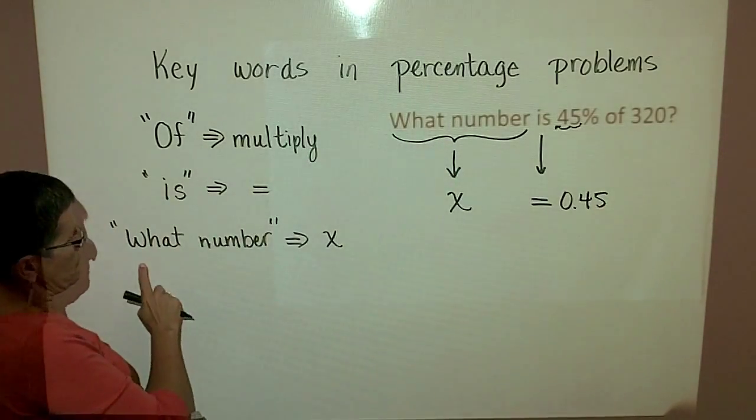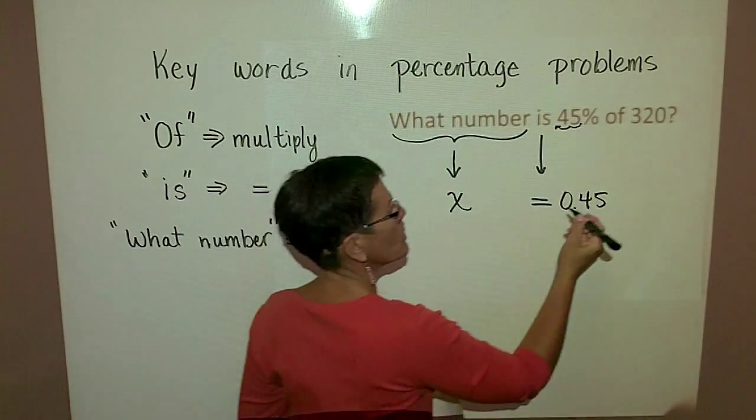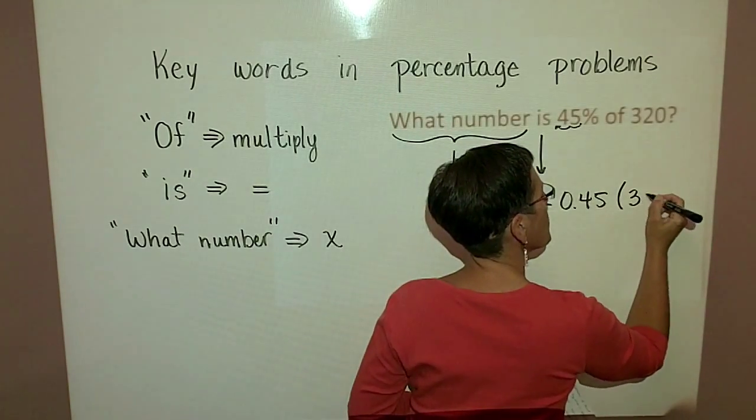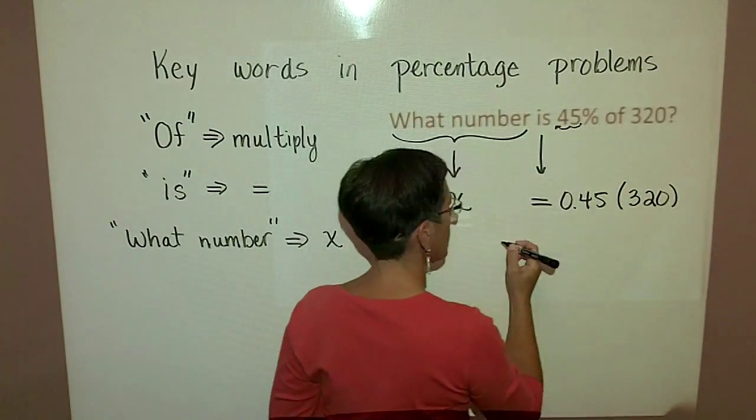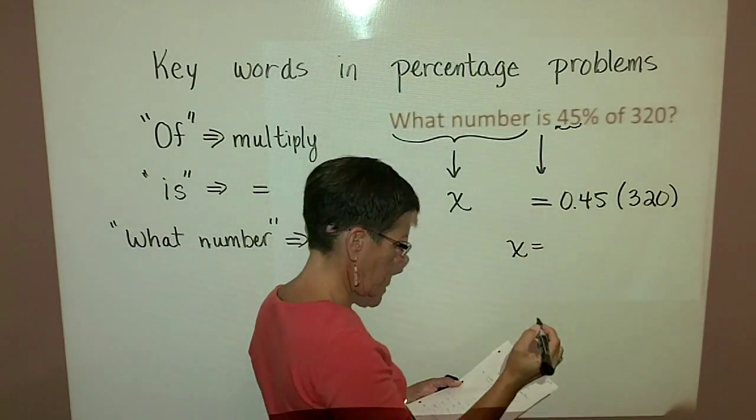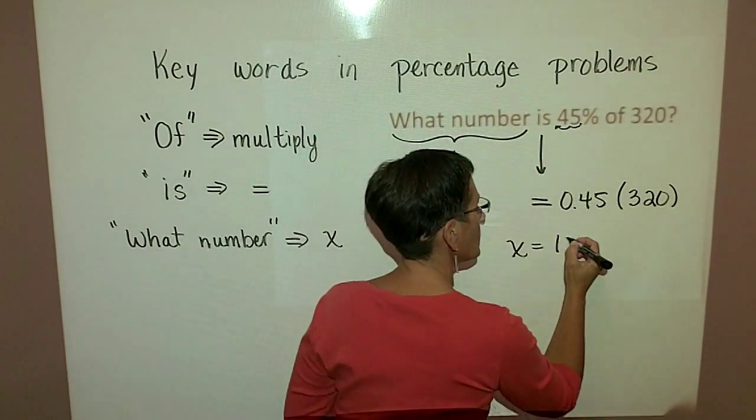Finally, of 320, so we want to multiply 0.45 times 320, and we find that that's equal to 144.